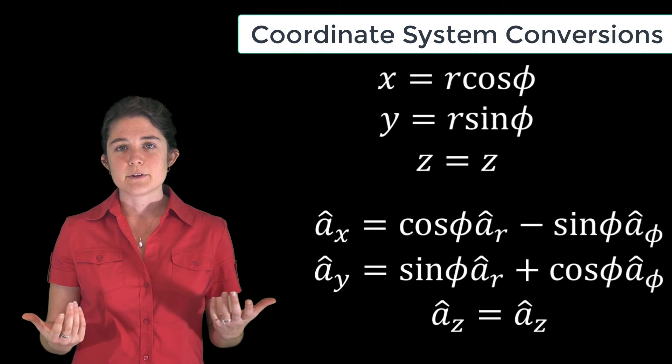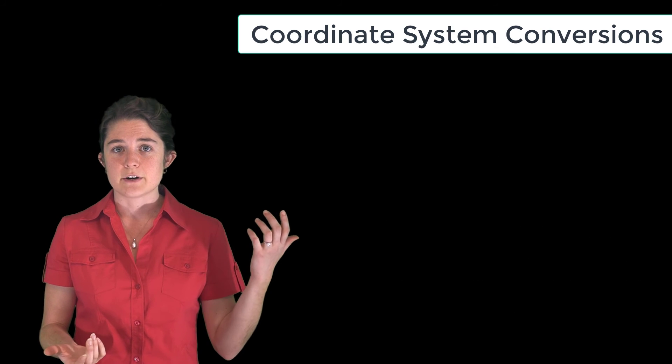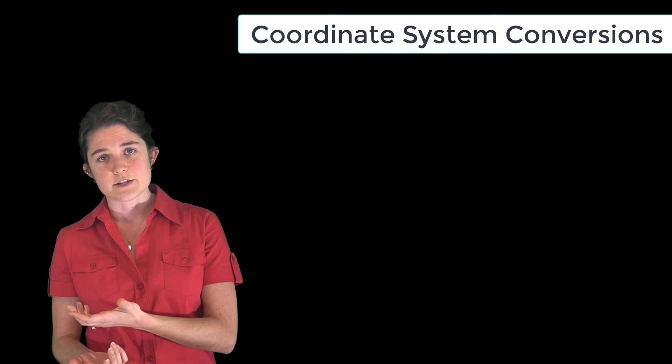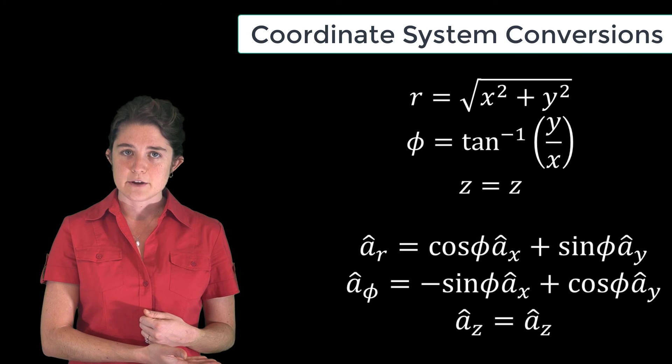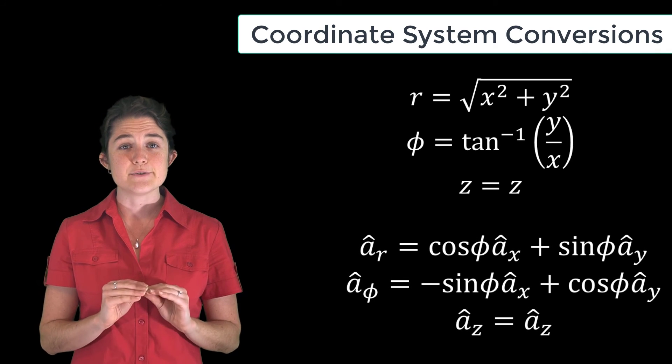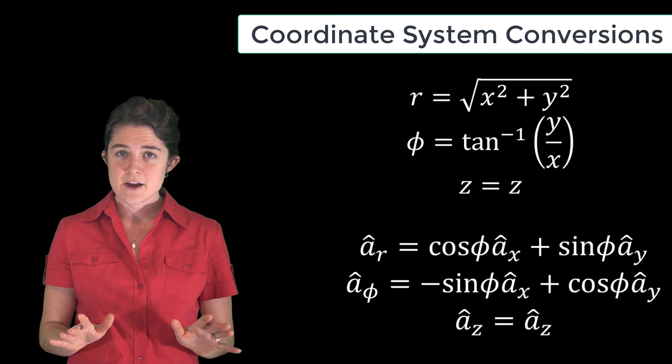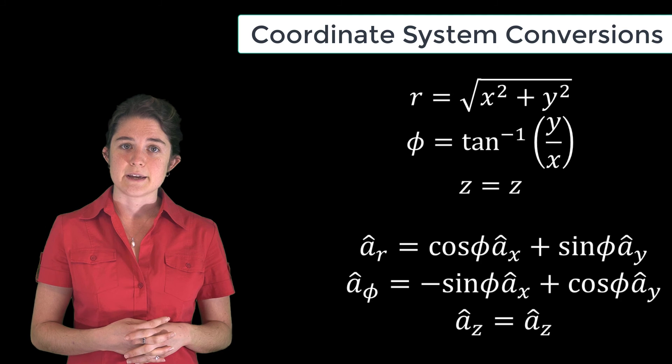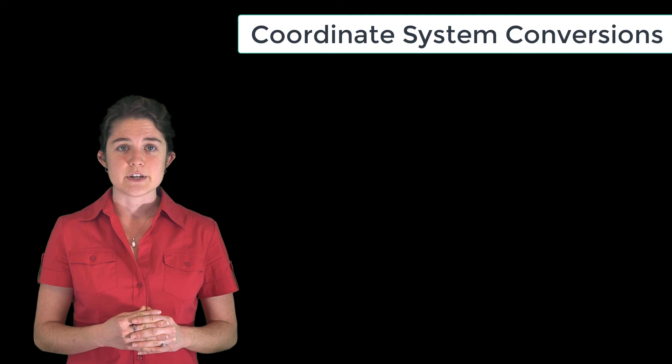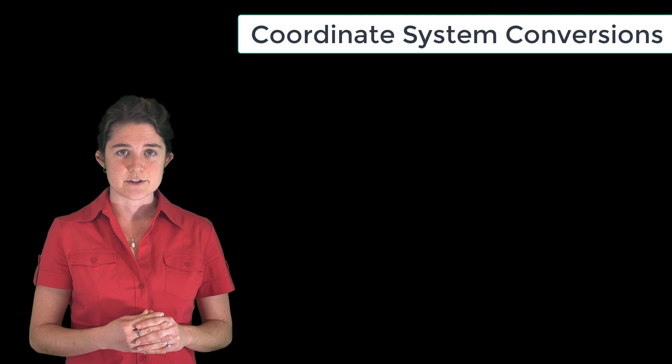There are also similar formulas for the reverse operation when you're converting from cylindrical space to Cartesian space. These are the formulas for converting the variables, and these are the formulas for converting the unit vectors. You don't need to memorize these formulas, but you may want to print out a copy and keep it handy, since we'll be using them frequently. You can find a printable sheet in the note slides that accompany this lecture. There are also several examples you may want to work through to become familiar with the process for converting between Cartesian and cylindrical domains.